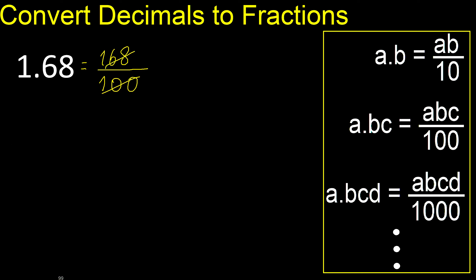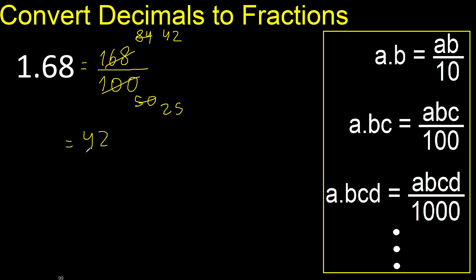It can be simplified because it can be divided by the same number. Divided by 2, divided by 2, divided by 2 — can be divided by 2. Finish, because it cannot be divided by the same number.